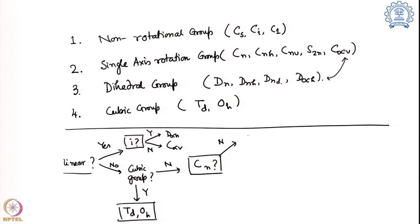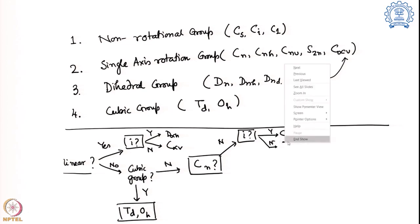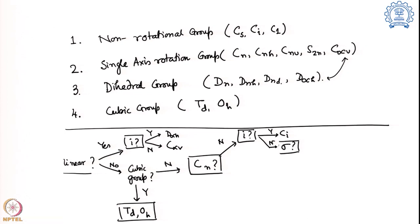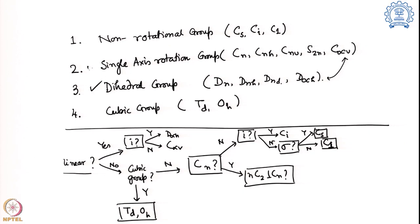If not cubic, we ask: does the molecule have a principal axis of rotation? If no, we ask whether it has a centre of symmetry i. If yes, it belongs to Ci. If no, we ask whether it has a plane of reflection. If yes, it belongs to Cs. If no, it belongs to C1. If the molecule does have a Cn, the next question is: do you have n number of C2 axes perpendicular to Cn? This differentiates between dihedral and single-axis rotation groups.